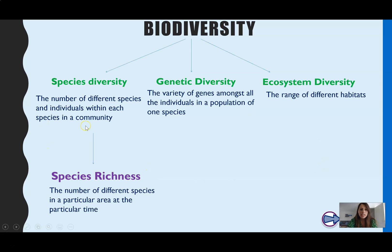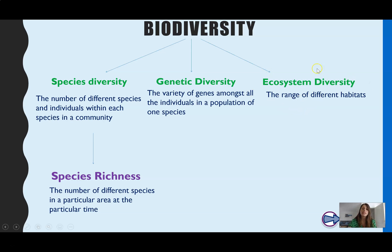Let's have a look at some key terms first of all — what we mean by biodiversity. There are three different measures for biodiversity. Species diversity, which is the number of different species and individuals within each species in a community. Genetic diversity, which is the variety of genes amongst all the individuals in a population of just one species. Or ecosystem diversity, which is the range of different habitats, and this could be measured on a small scale or considering the entire Earth.